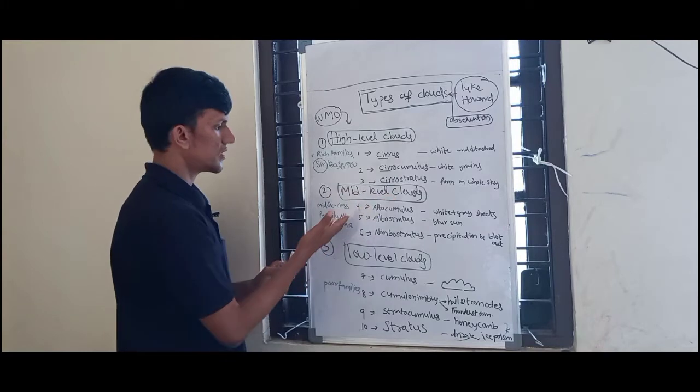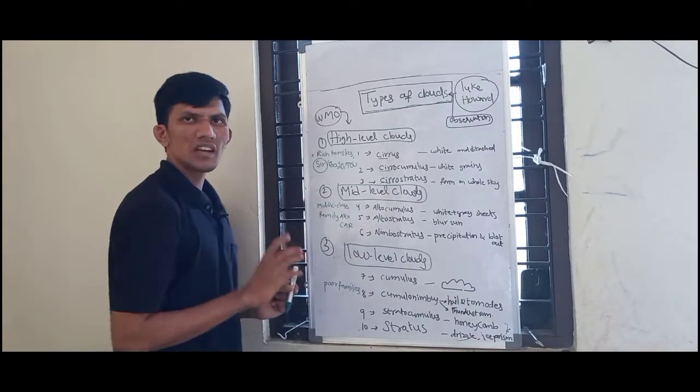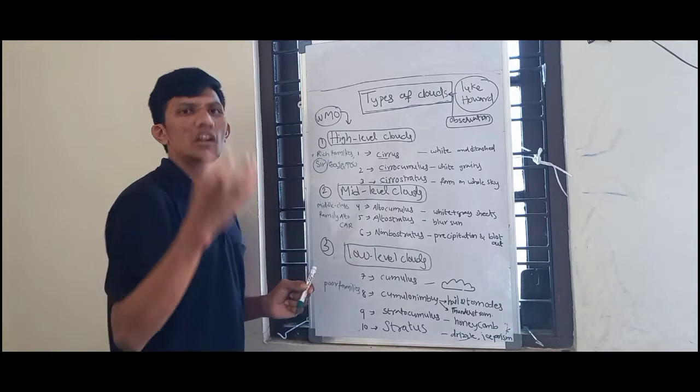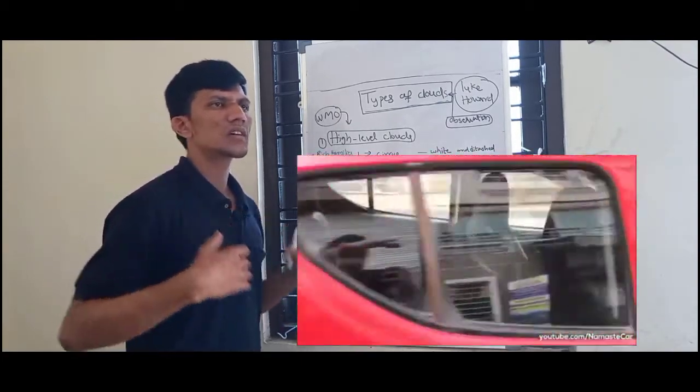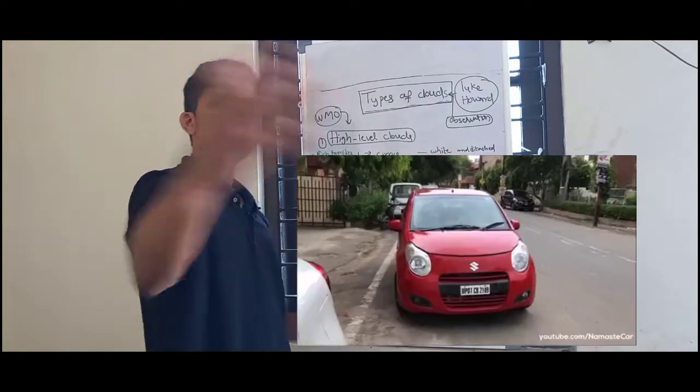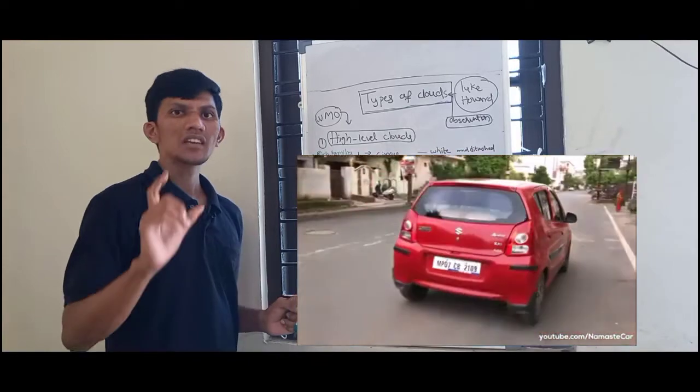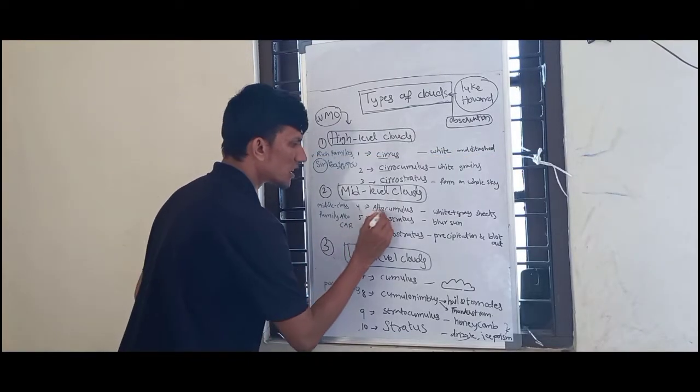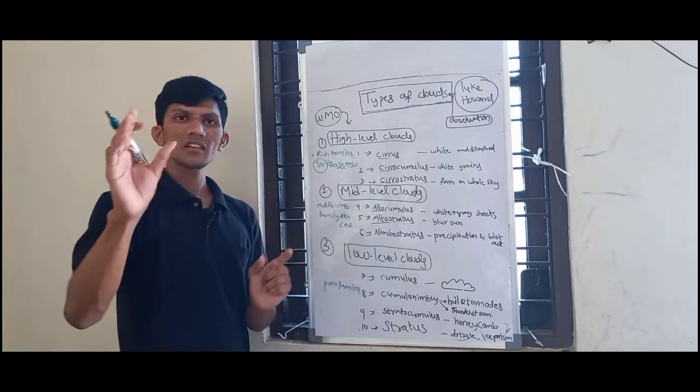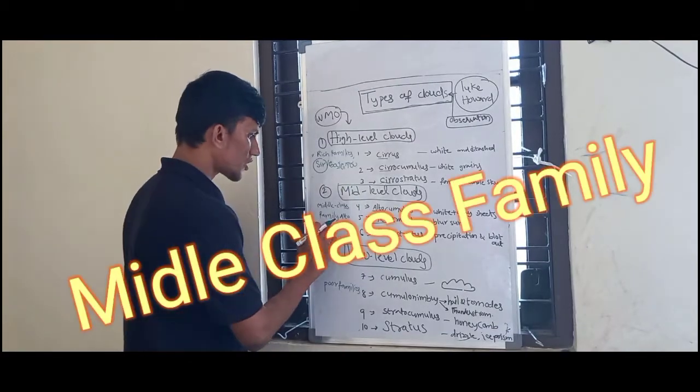So now we have middle class family. Middle class family here is an alto car. More of India will be covered in alto. In the middle level clouds - altocumulus and altostratus - these are the middle class, middle level clouds.